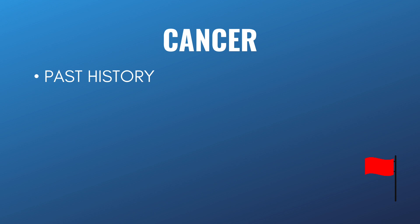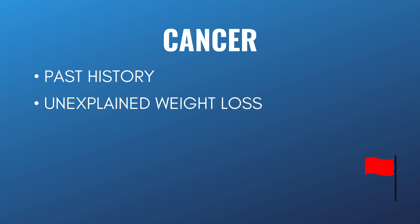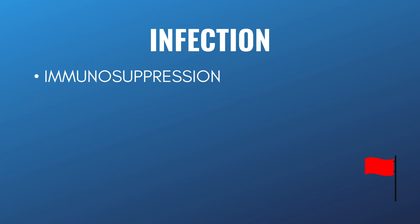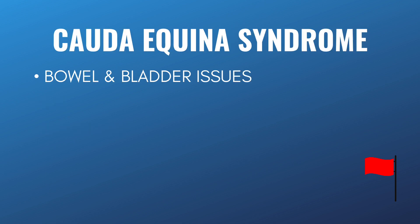The red flags for cancer include past history of cancer and unexplained weight loss. The red flags for infection include a poor immune system, urinary tract infection, and drug use. The red flags for cauda equina syndrome include bowel and bladder issues, and loss of sensation around the buttocks and the inner side.